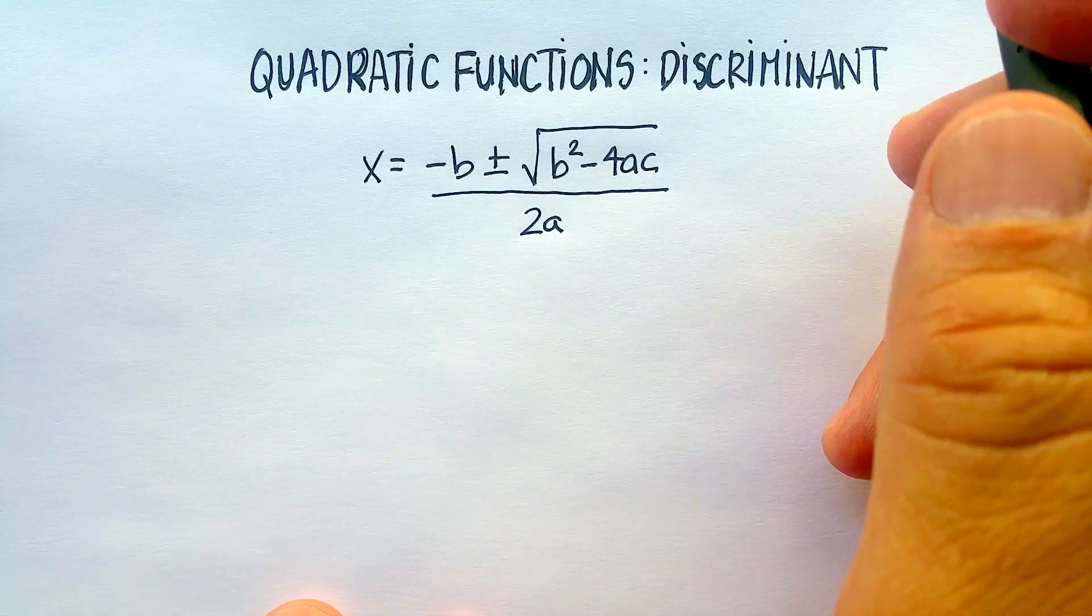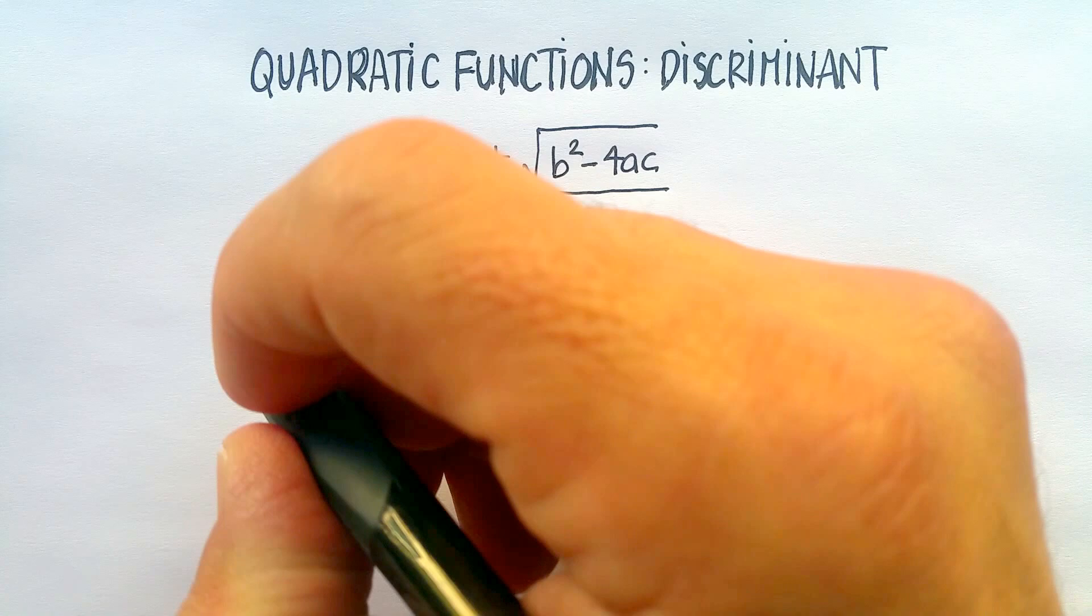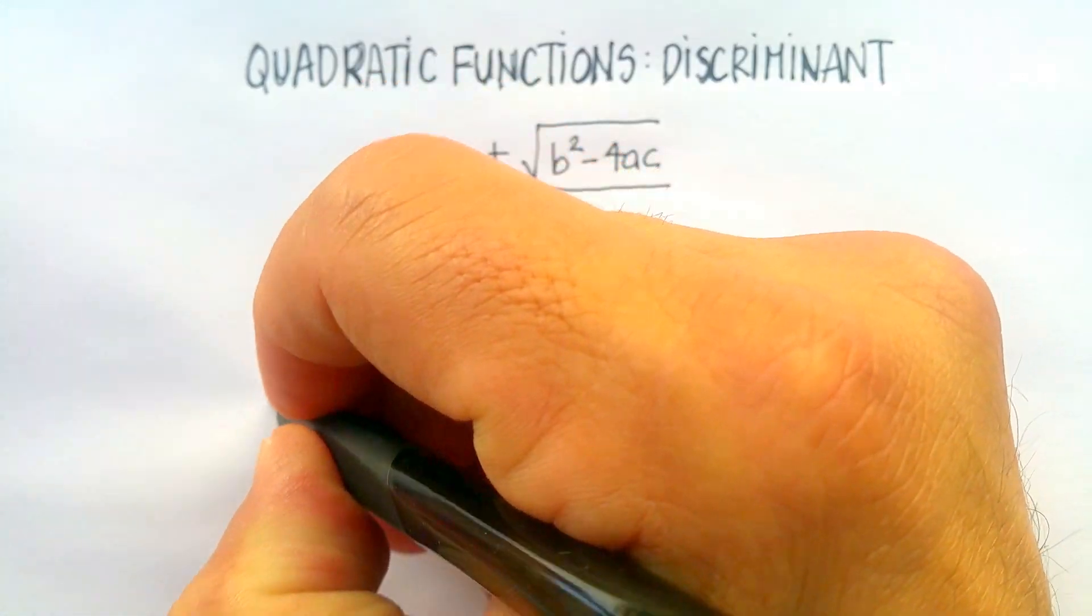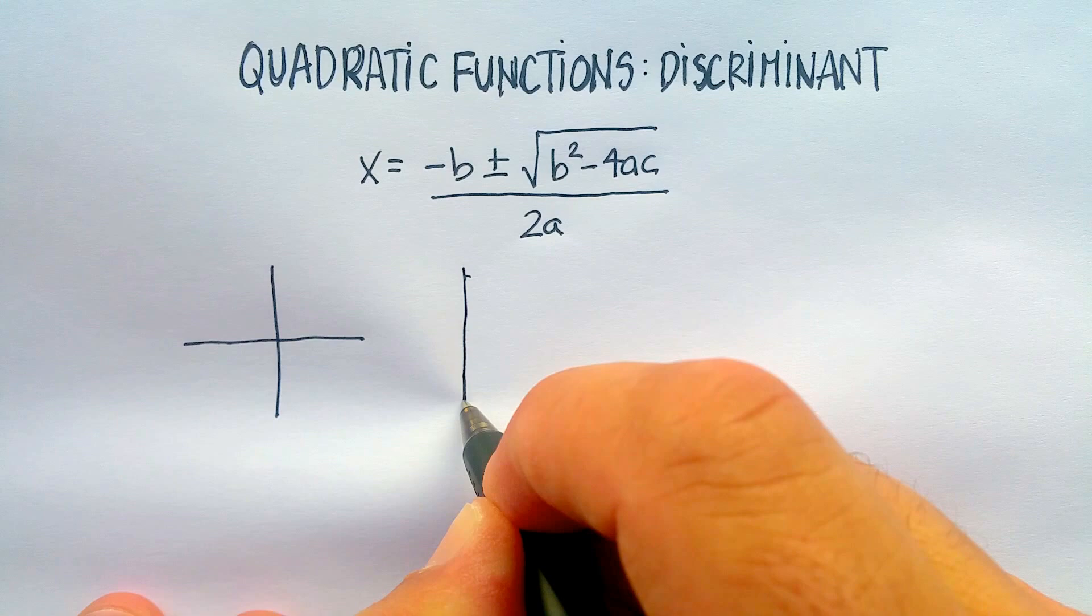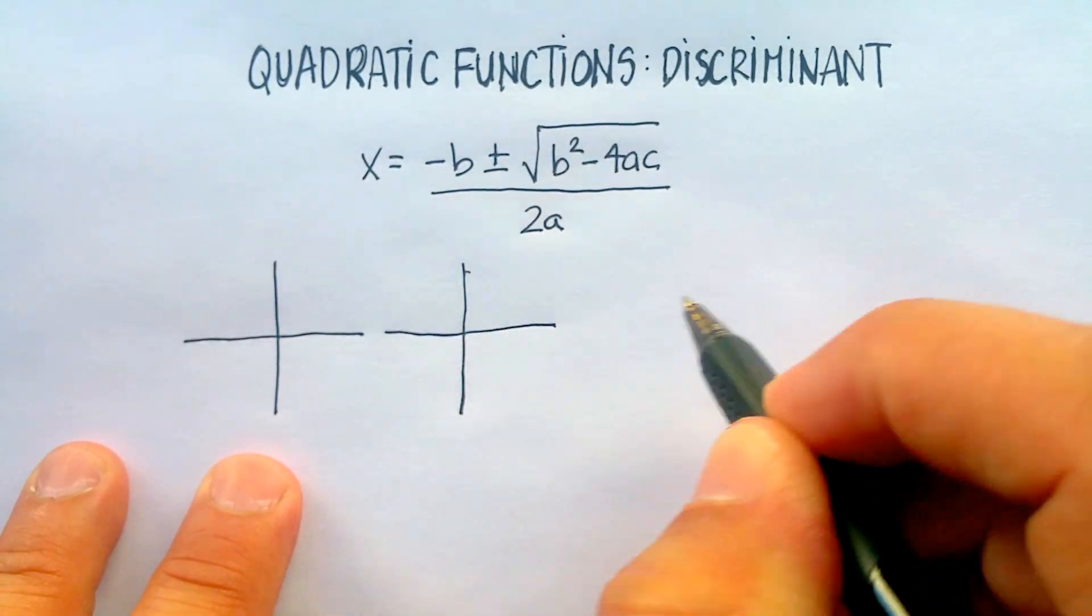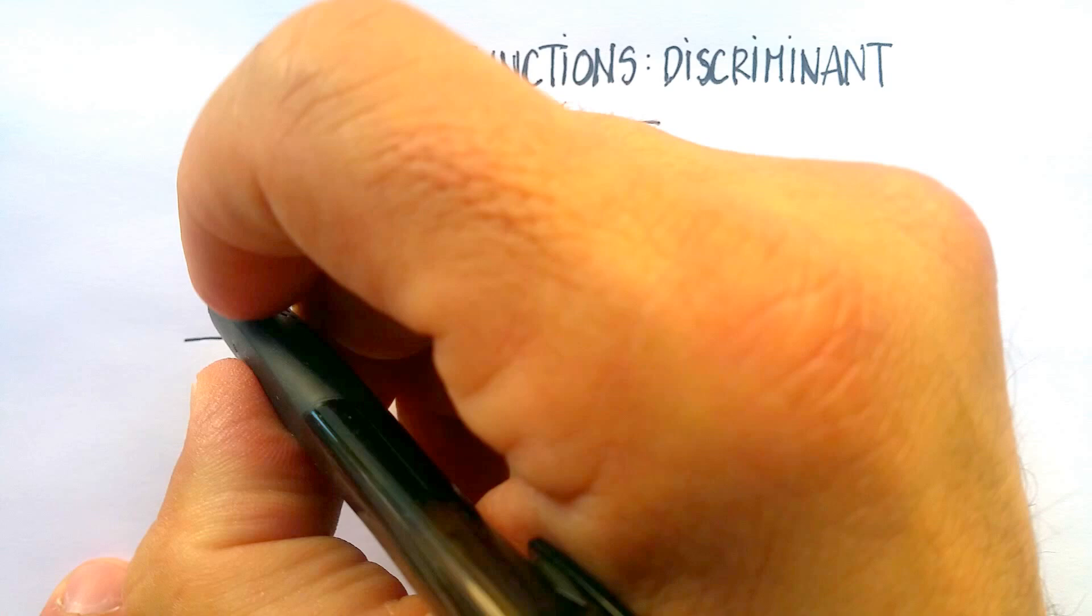You remember in a previous video, we talked about parabolas or quadratics that cross the x-axis once, twice, or not at all. Let me just do a quick sketch on these - I won't be able to do all of them, but you get the idea.